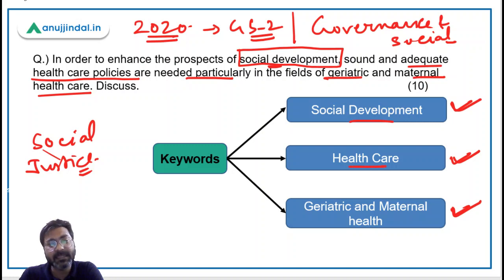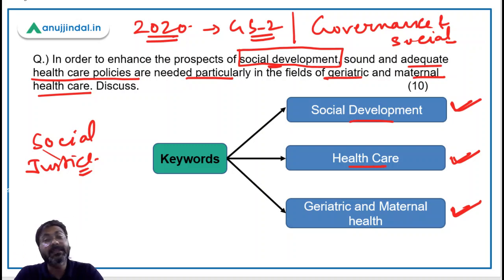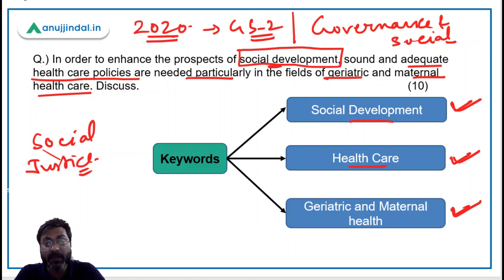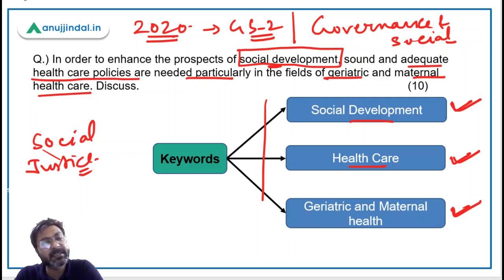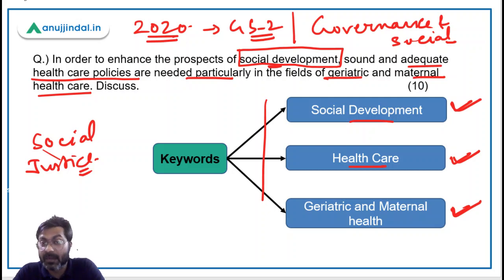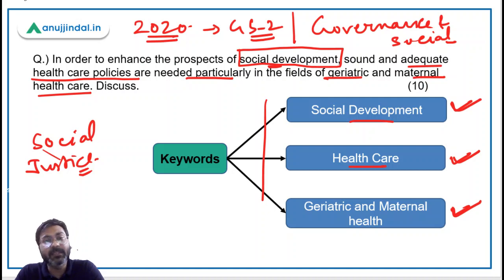We can start with social development and healthcare, and after that move to the main demand of the question in the body — which is the need for geriatric and maternal healthcare policies. The objective of this session is not just to discuss one or two questions; the objective is to develop skills so that if you follow this approach, after good practice you will be able to write good mains answers.